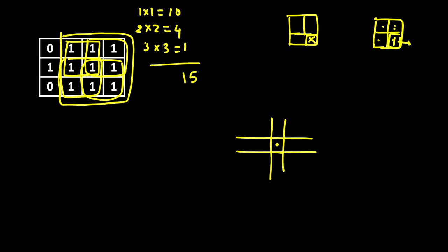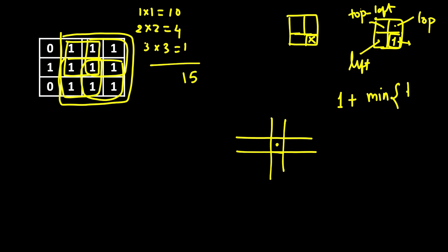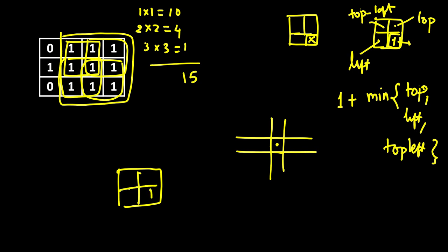Then we look at three cells: top, left, and top-left. We take 1 plus the minimum of top, left, and top-left. If top-left is 2, that means two squares are ending at that position. We start from the first row: for the first row, the number of squares ending at each cell is 0 or 1 depending on the value.